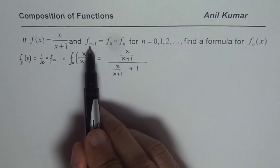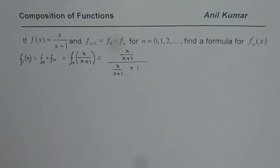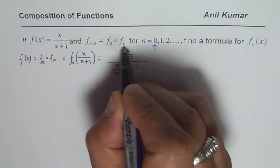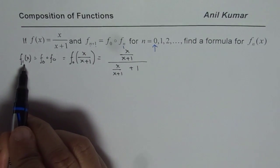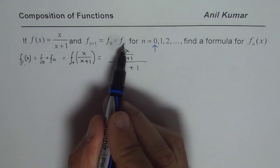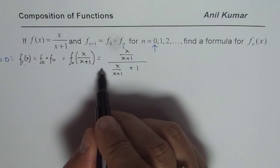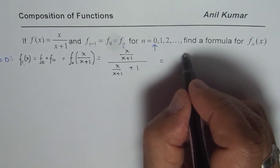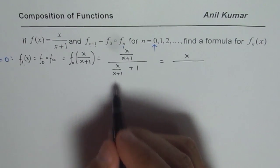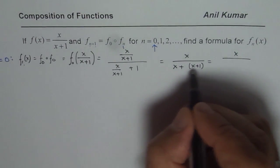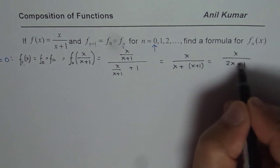Writing n equals 0 into f of n plus 1: n plus 1 becomes 1, and we get f₁ as f₀ of f₀. Now we simplify this expression by multiplying both numerator and denominator by x plus 1. We get x in the numerator divided by x plus x plus 1, which combines to give x over 2x plus 1. So that is the simplified form, and this becomes f₁ of x.